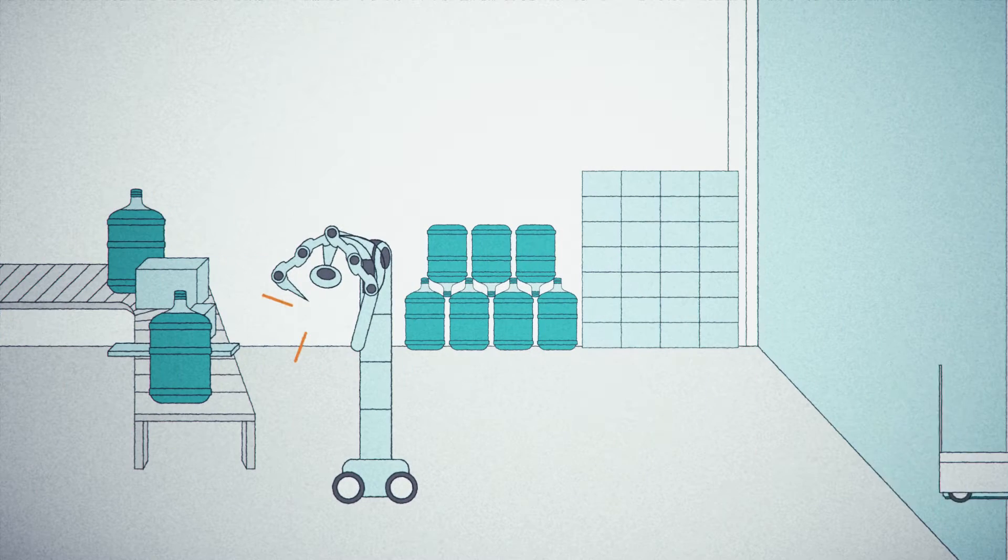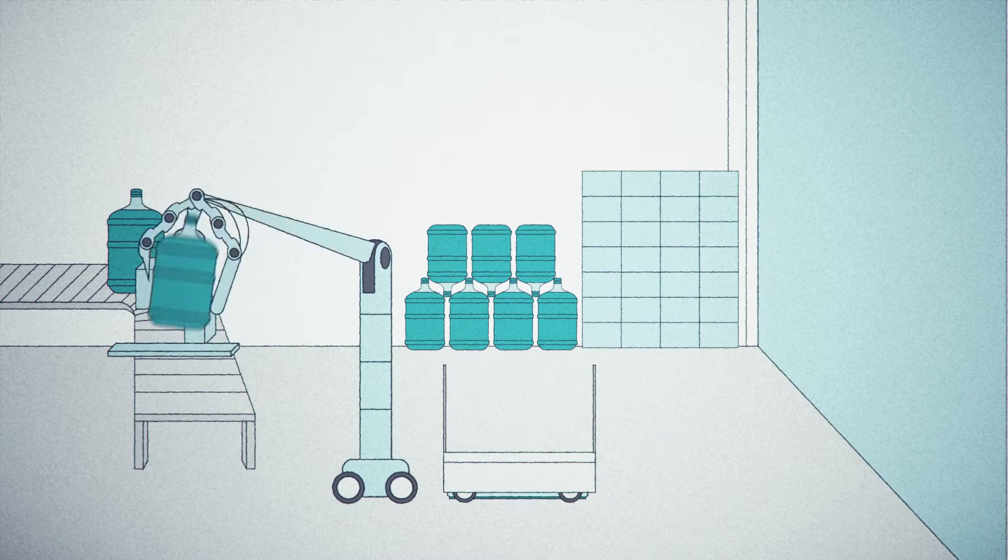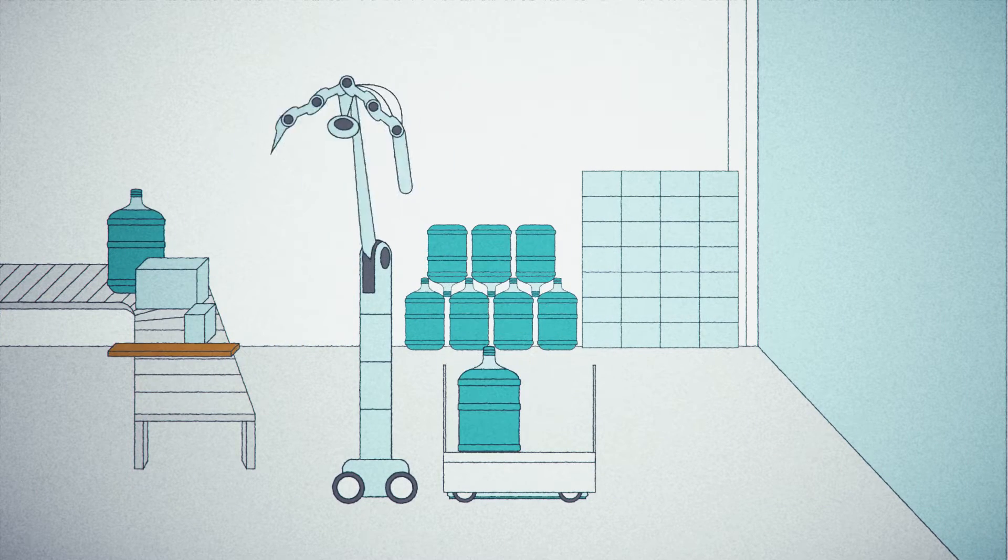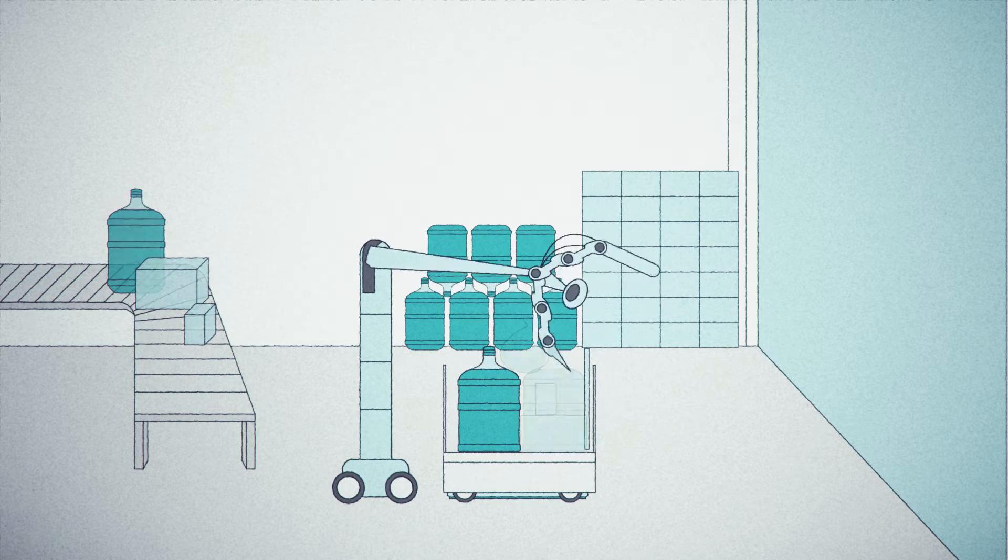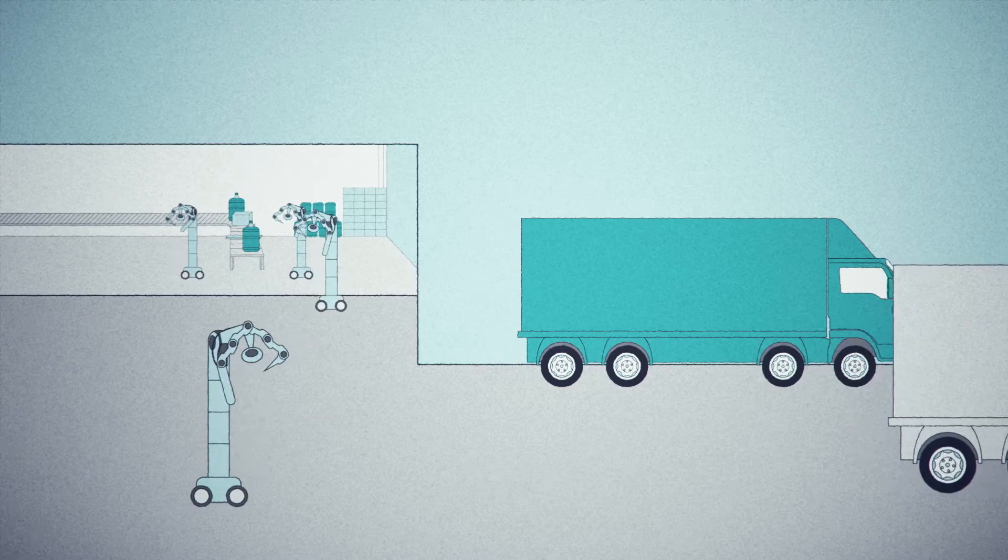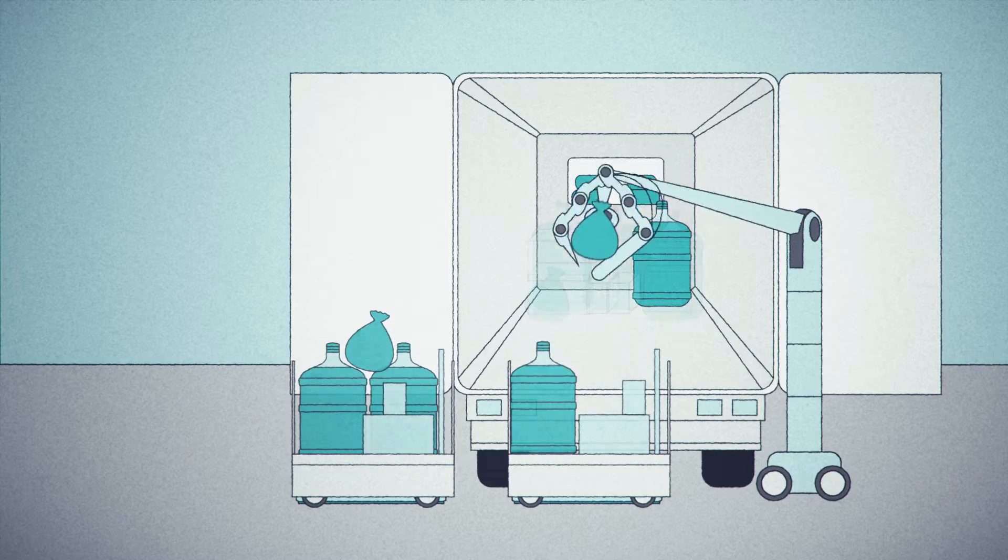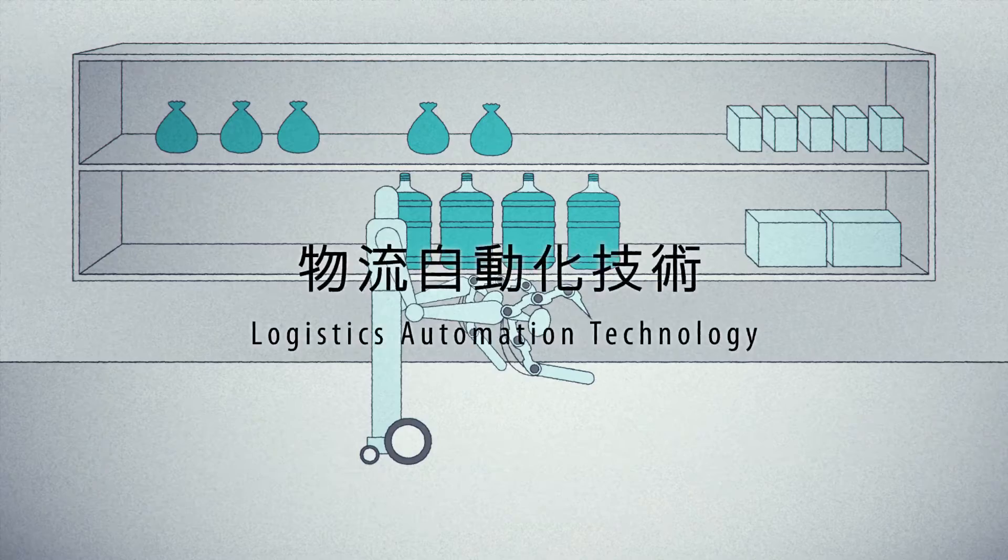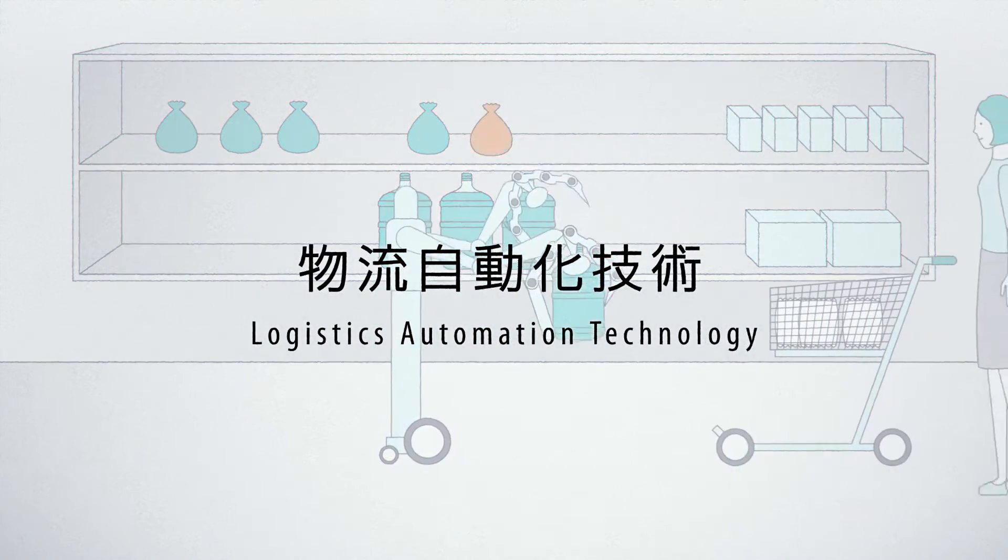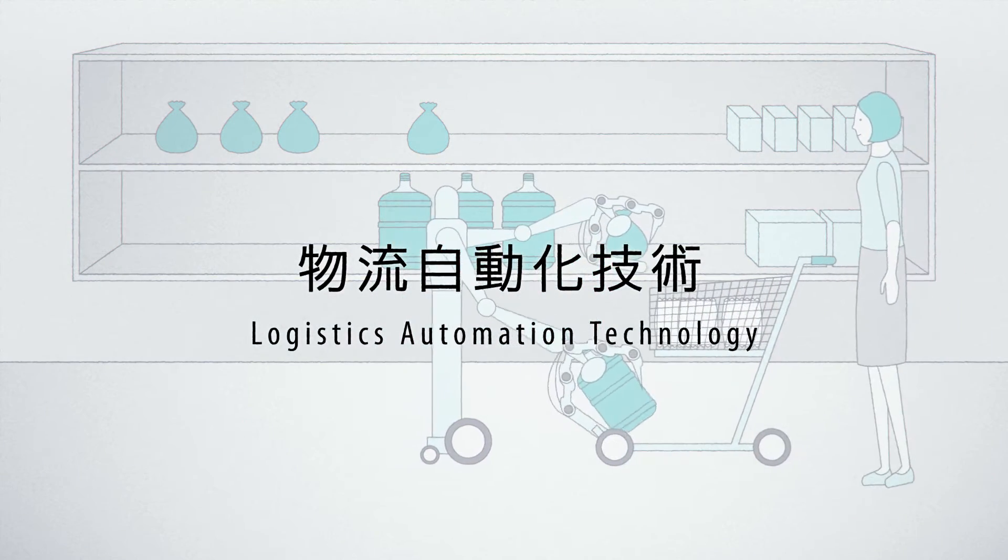These robots distinguish the packages and quickly process them by their shape and weight. Toshiba is developing robots that can safely undertake laborious or complex tasks to improve logistics efficiency. The technology that creates this value is logistics automation technology.